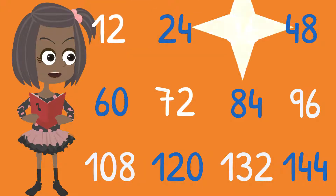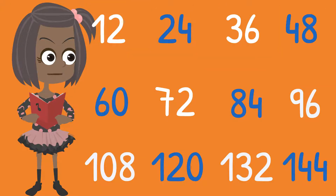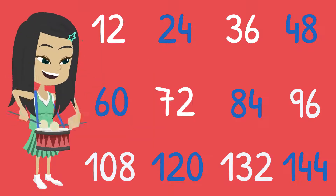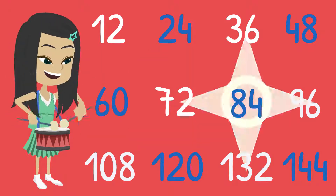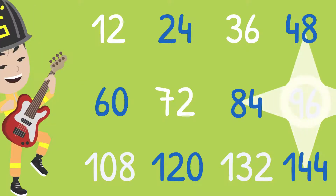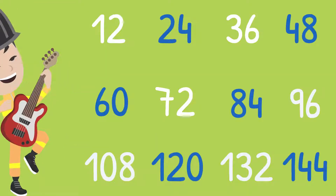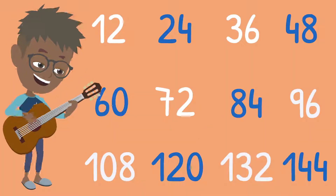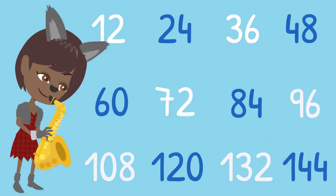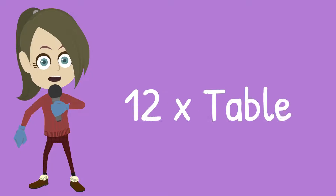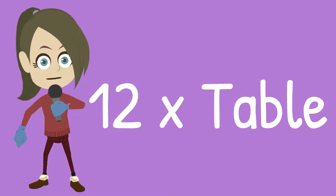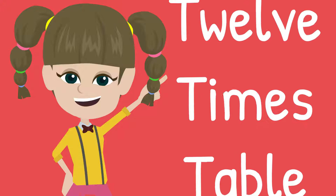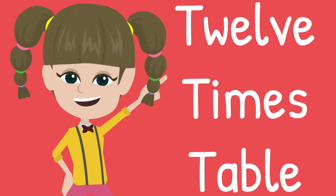12, 24, 36, 48, 60, 72, 84, 96, 108, 120, there's two more, that's 132, and 144. It's a 12 times table.